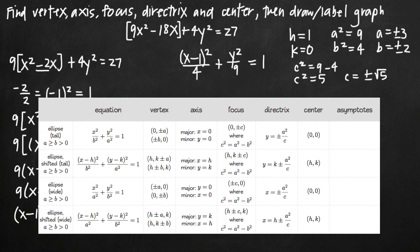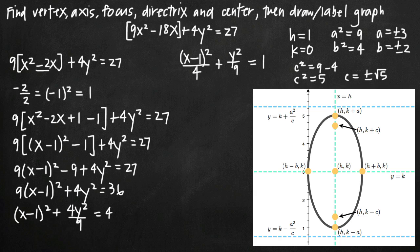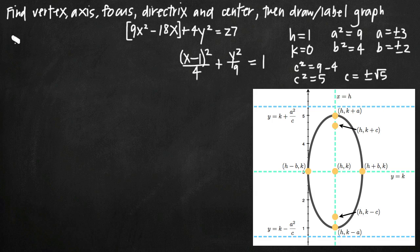Now we have all the values — h, k, a, b, and c — to calculate all other properties of the ellipse. We can use a picture of a tall shifted ellipse with all points labeled. The center is at h, k, which in our case is 1, 0.